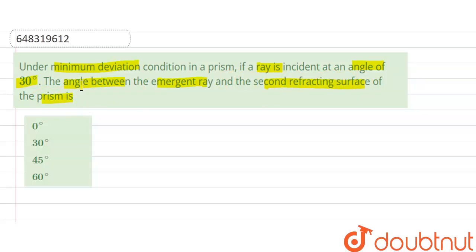So here we want to find out the angle between emergent ray and second refracting surface of the prism. We are given angle of incidence is equal to 30 degrees.